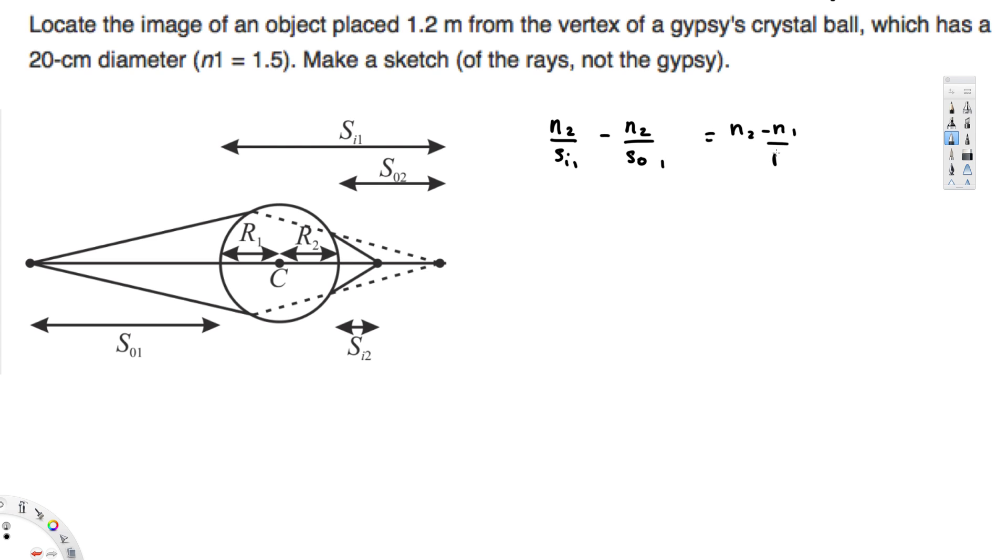Here n₁ is the refractive index of the air, n₂ is the refractive index of the ball, and sₒ₁ is the object distance from the first surface of the ball and sᵢ₁ is the image distance from the first surface of the ball. Okay, that's already mentioned in the diagram.